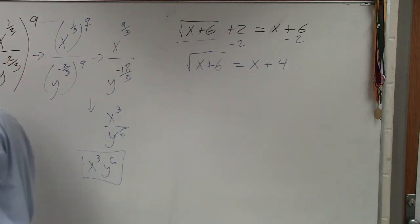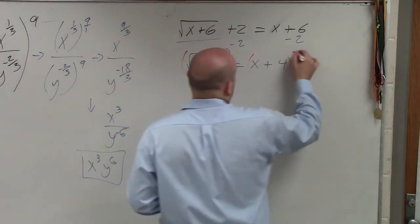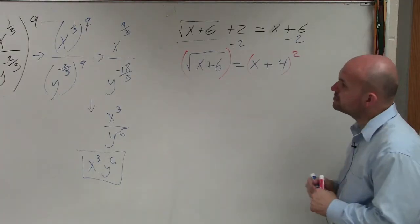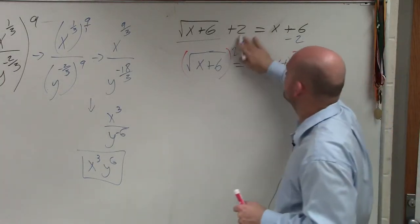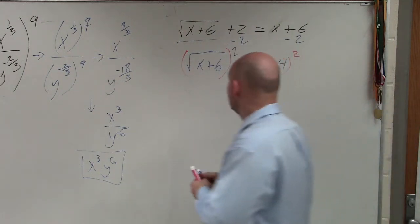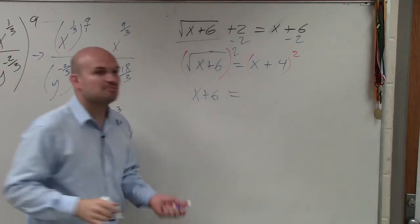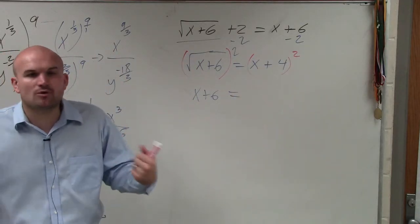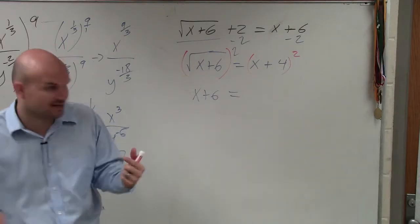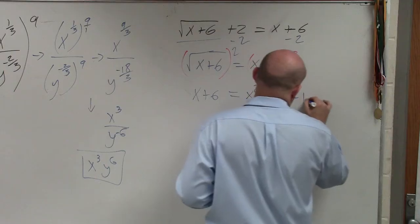Now, to undo the square root, I'm going to square both sides. So the square root is just going to leave me with x plus 6 equals x plus 4 squared, which is x plus 4 times x plus 4. If you guys want to do FOIL on your own, you can. I'll just tell you the answer is going to be x squared plus 8x plus 16.